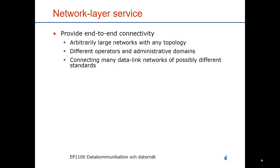So the service that it provides is end-to-end connectivity for arbitrarily large networks of any topology. It allows different operators, meaning different network owners, and the owners can have their networks partitioned into different administrative domains. For instance, a large operator such as Telia or Deutsche Telekom could have administrative domains which are national in the countries where they operate. The network layer service connects together many different data link networks that could be of different standards.